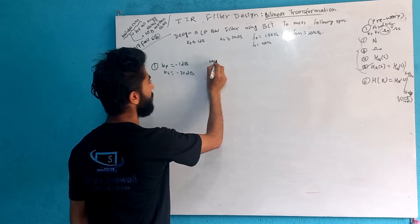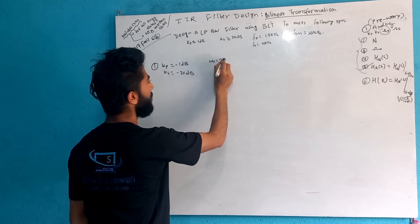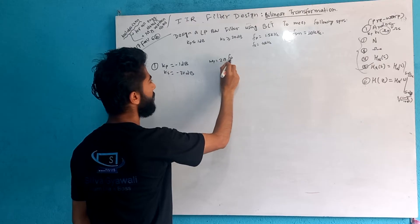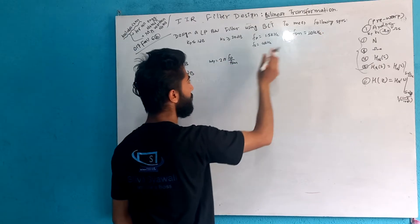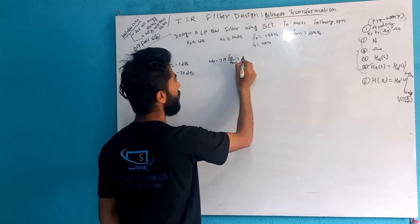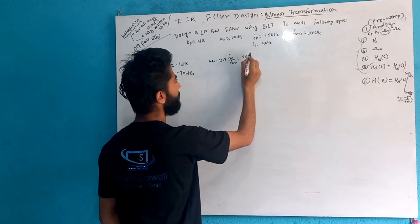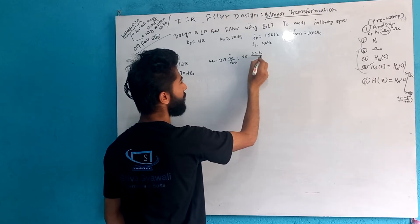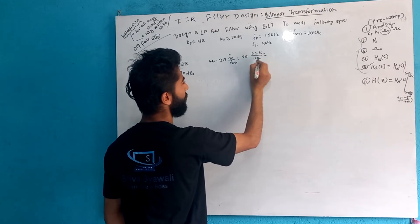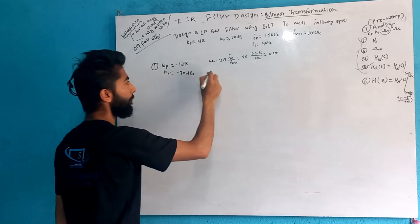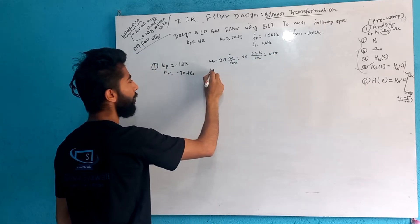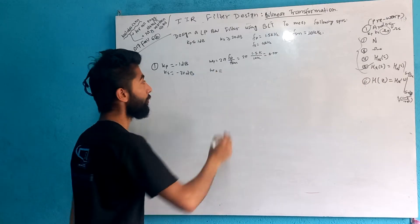So this is omega_p. This is the sampling frequency. So this is 2π × 1.5 kHz. And 2π × 10 kHz. That gives 0.15 and 0.3π. This is the sampling frequency.